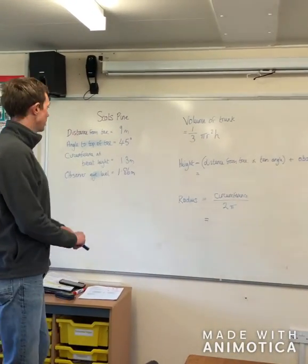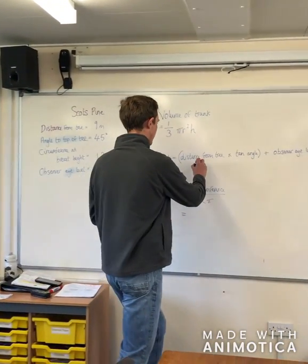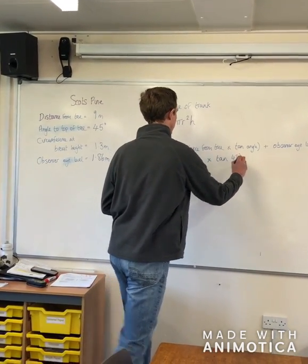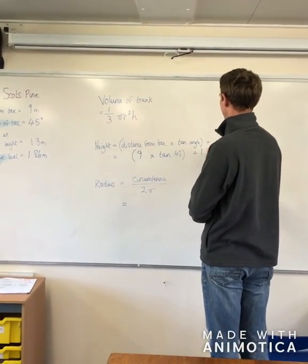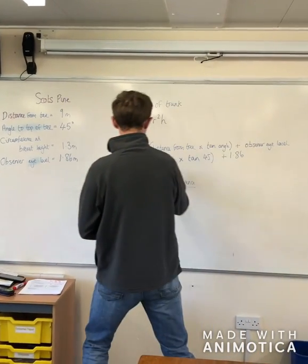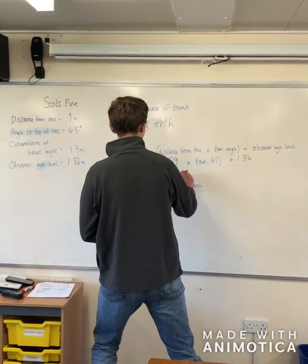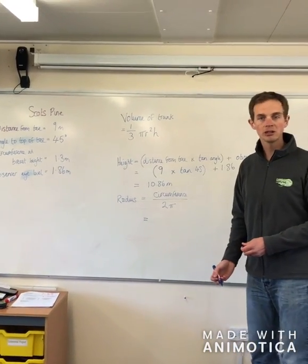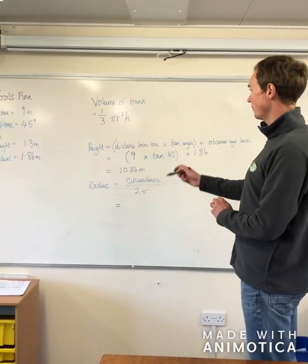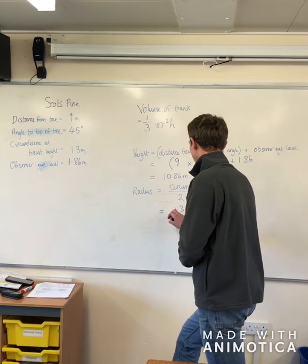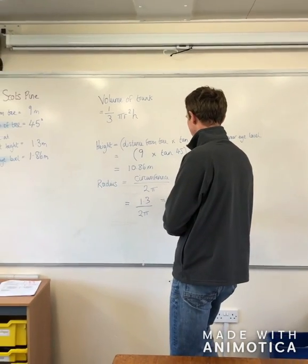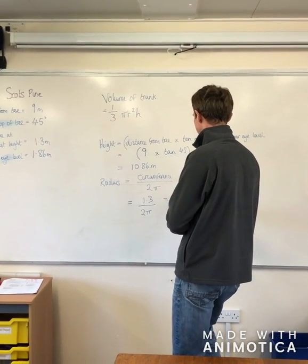So in terms of our tree, our distance from the tree in our example is 9 metres. We're going to multiply that by tan of 45 degrees, and then add the observer height on top. If you put that into a calculator, that comes out as 10.86 metres tall, which for our tree looks about right. When it comes to our radius, we just need our circumference at breast height — so that's 1.3 divided by 2 pi — and our radius comes out as 0.16 metres.